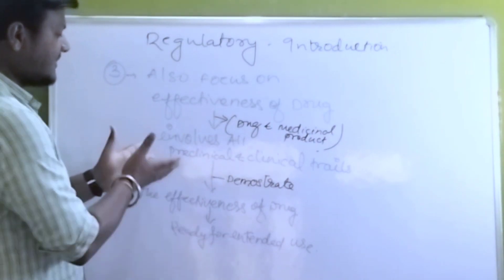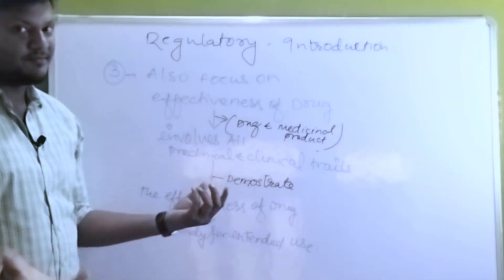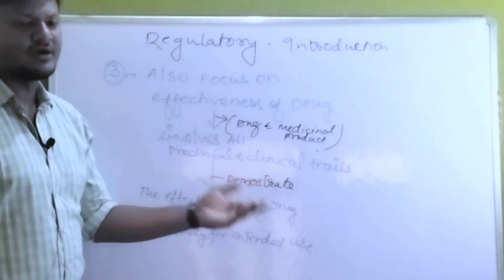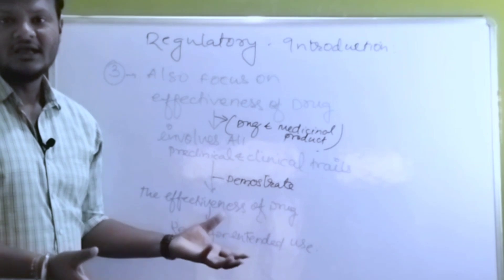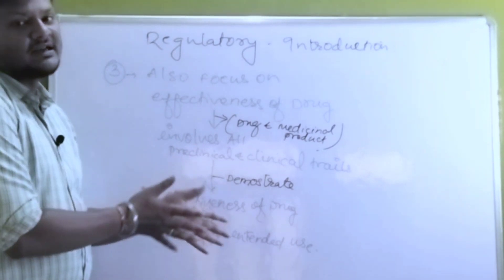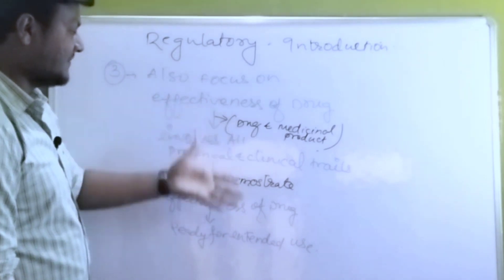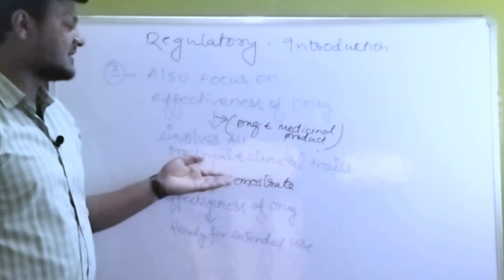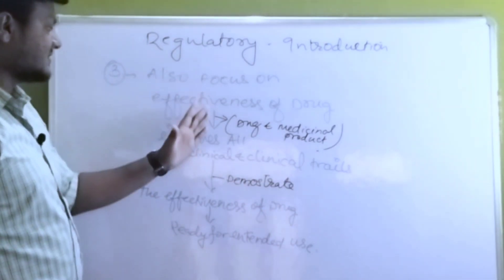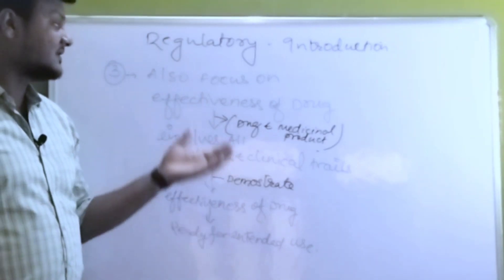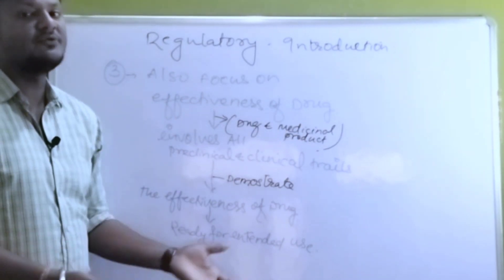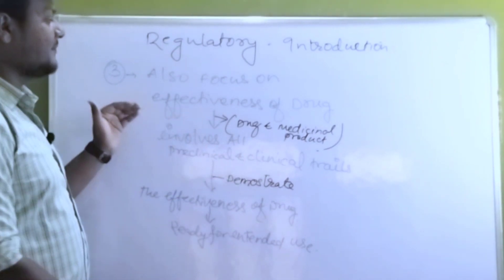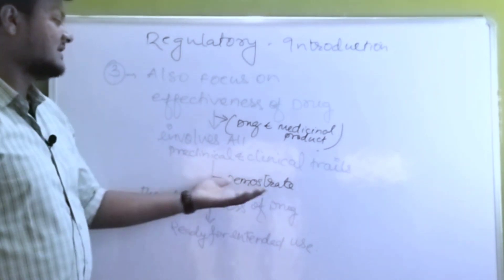Point number two: The primary goal of regulatory is ensuring the newly developed product's associated risks and benefits regarding safety. The factors involved in development stages include pre-clinical and clinical trials. From the basic stages of product development through the final stages of pre-clinical and clinical trials, regulatory is also a focus.